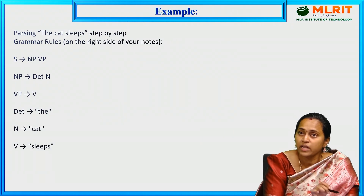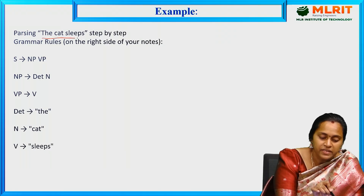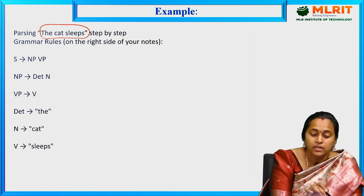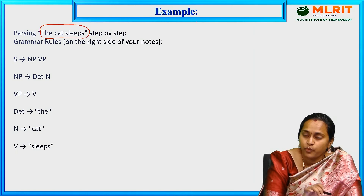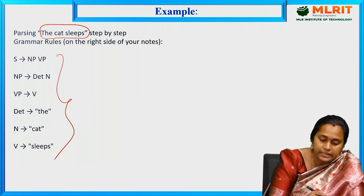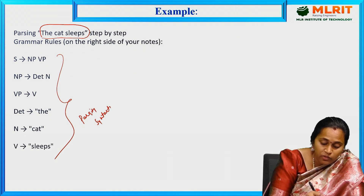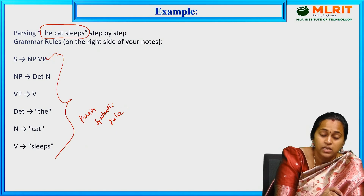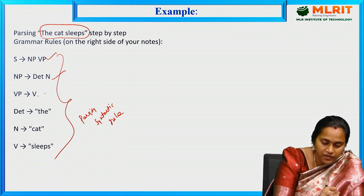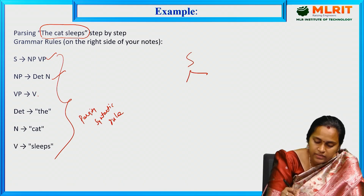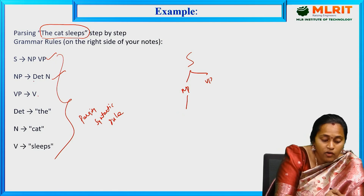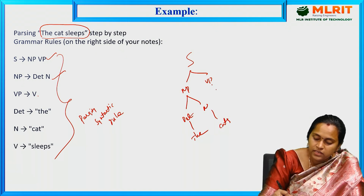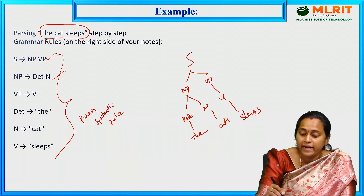By combining all these, we can solve an example problem. Taking the sentence 'The cat sleeps' - it contains three words. 'The' is the determiner, 'cat' is the noun, and 'sleeps' is the verb. The sentence contains both noun phrase and verb phrase. Using grammar rules: S → NP VP, NP → determiner noun, VP → verb, with determiner='the', noun='cat', verb='sleeps'. This gives us the final parse tree structure.